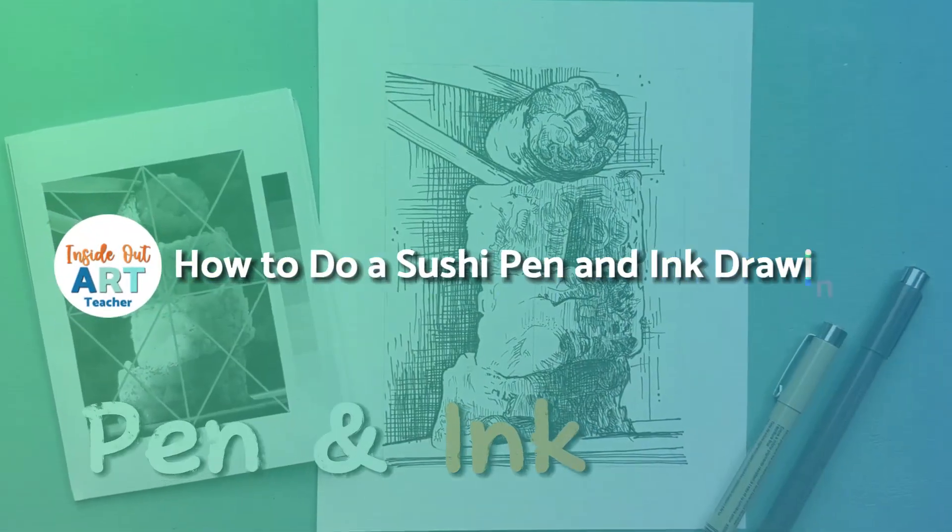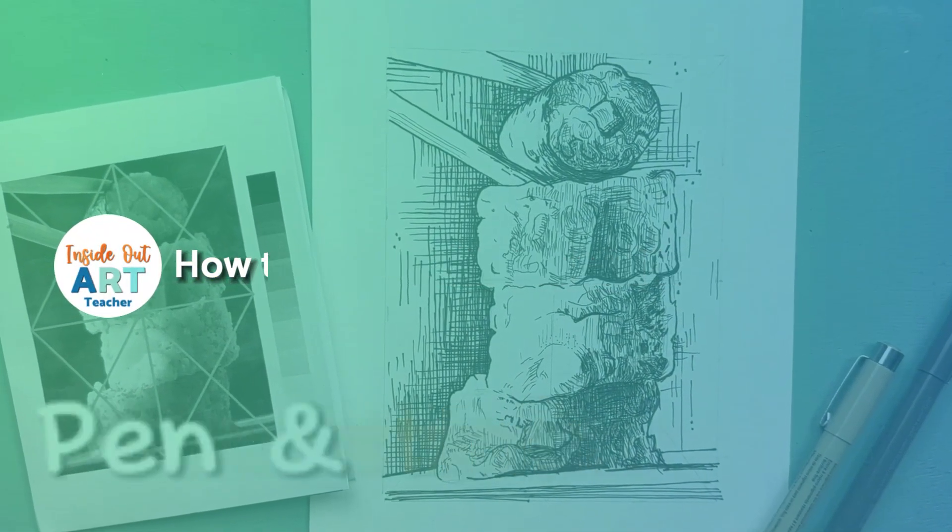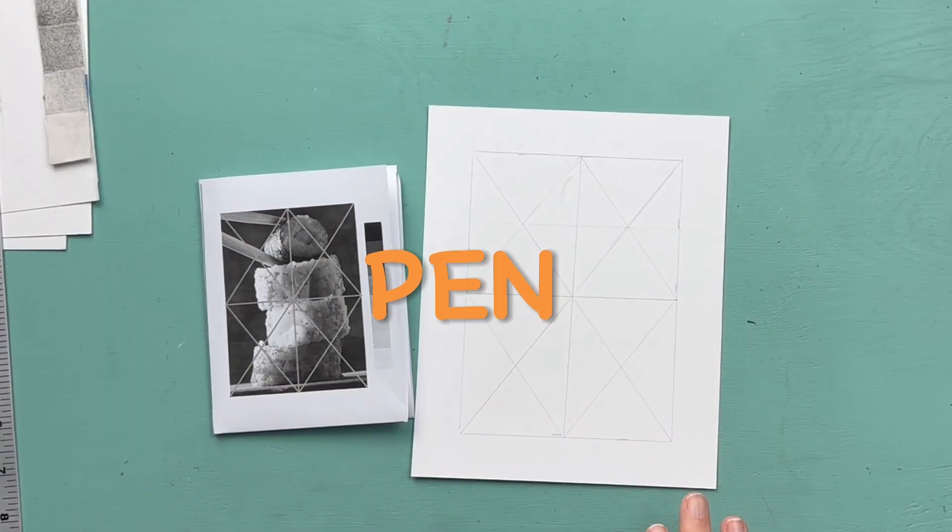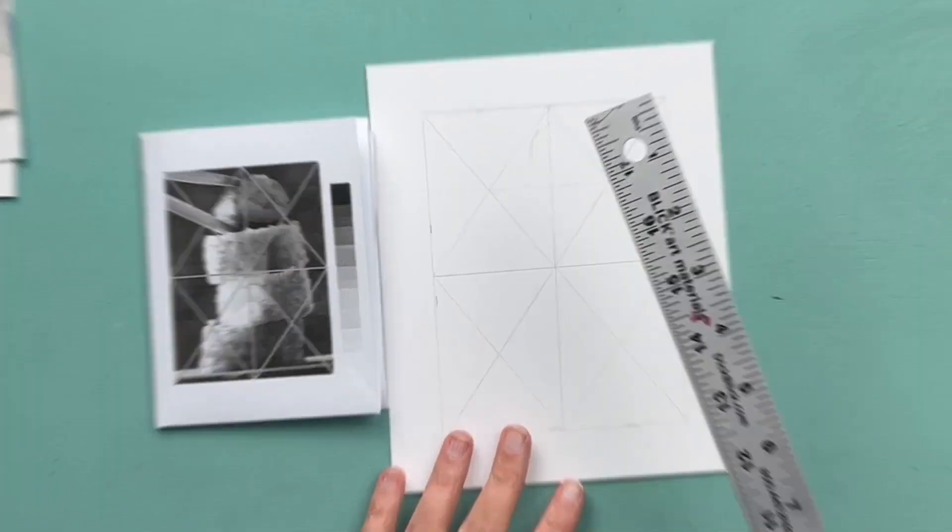Today we are going to learn how to do a sushi pen and ink drawing. To get started, we are going to begin by lightly sketching our image onto our paper.